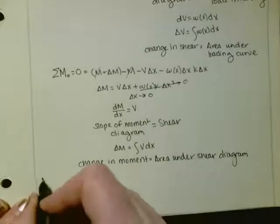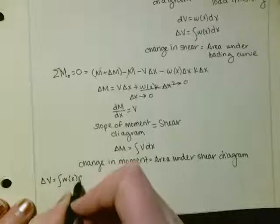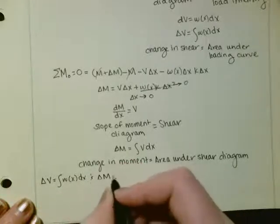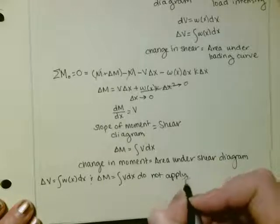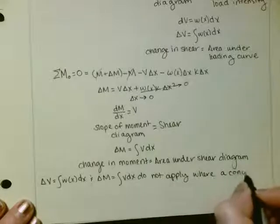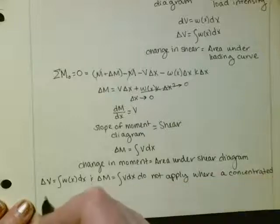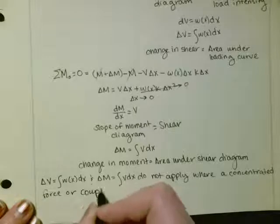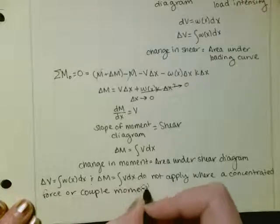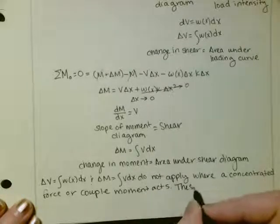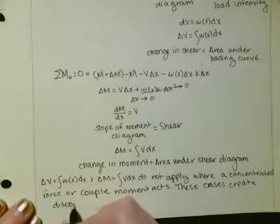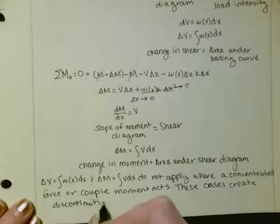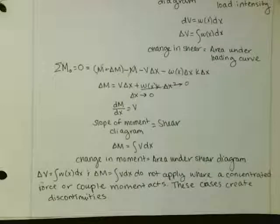Something to note: these equations — delta V equals the integral of w(x) dx, and delta M equals the integral of V dx — do not apply where a concentrated force or couple moment acts. So if you have a concentrated force or a couple moment, you can no longer use the change in moment equals the area under the shear diagram.